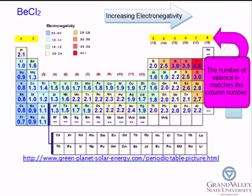The total number of valence electrons in this molecule is 16: two electrons from beryllium and seven electrons from each chlorine atom.